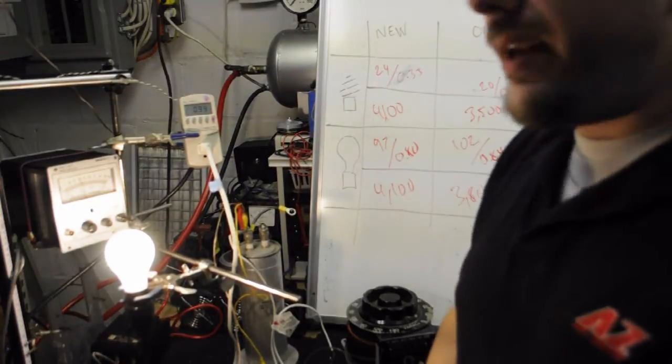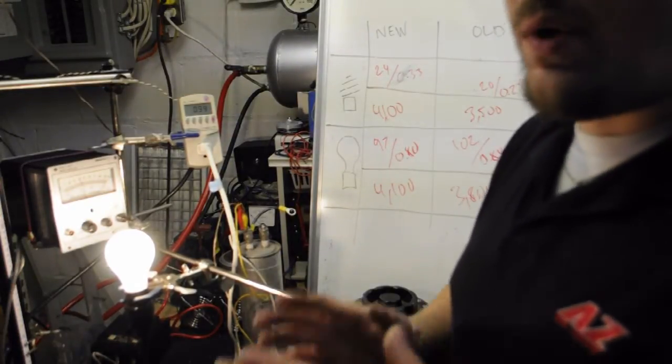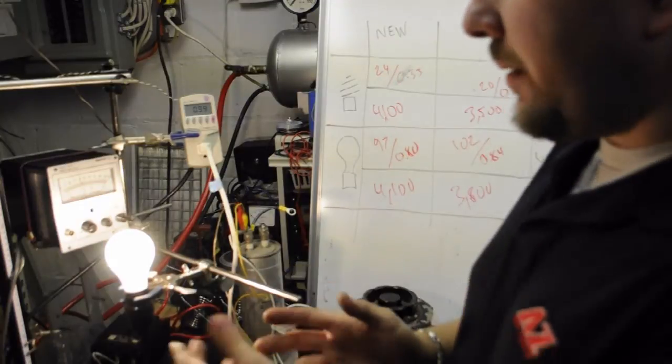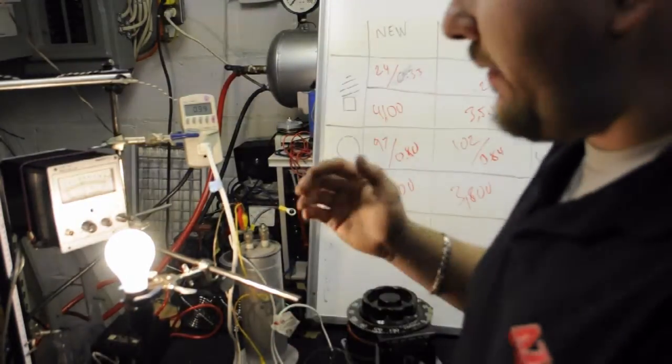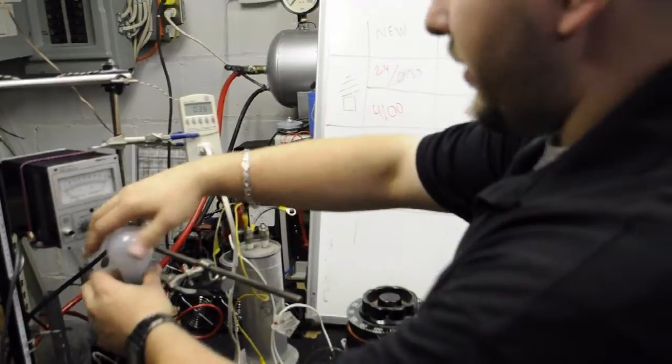Incandescent light bulb is 0.99. For the sake of this video, the closer to one, the better. So an incandescent light bulb being a resistive load is almost perfect. There's no power factor correction there. So no cost incurred.